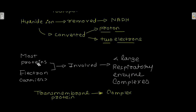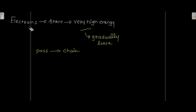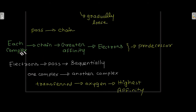Most of the proteins or electron carriers involved in this process are grouped into four large respiratory enzyme complexes, each containing a transmembrane protein. The electrons start with very high energy and lose this energy gradually as they pass along the chain. Each complex has greater affinity for electrons than its predecessor, and electrons pass sequentially until transferred to oxygen, which has the highest affinity for electrons.